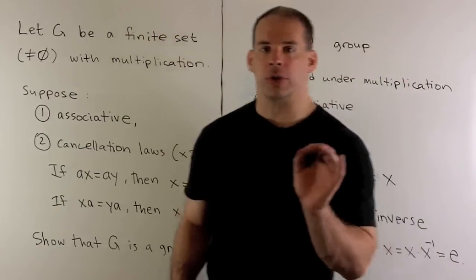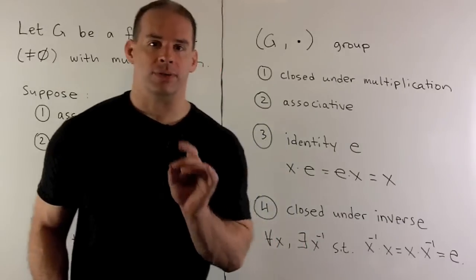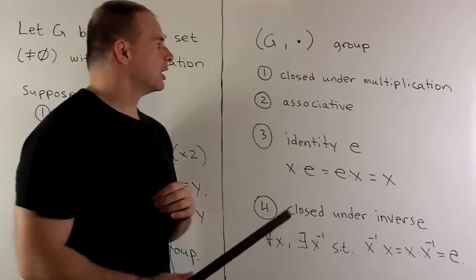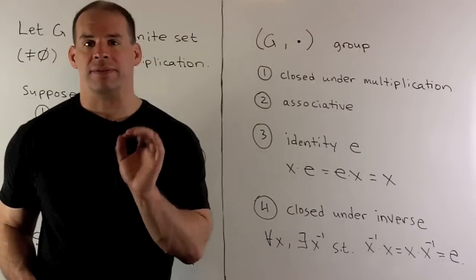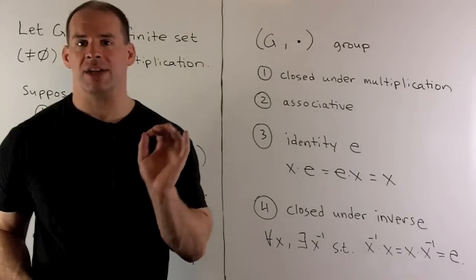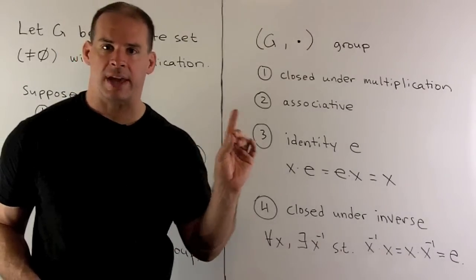Now, to show that G is a group, we have to show four properties. First, that G is closed under multiplication. By definition, our binary operation has values in G itself, so we get that for free.